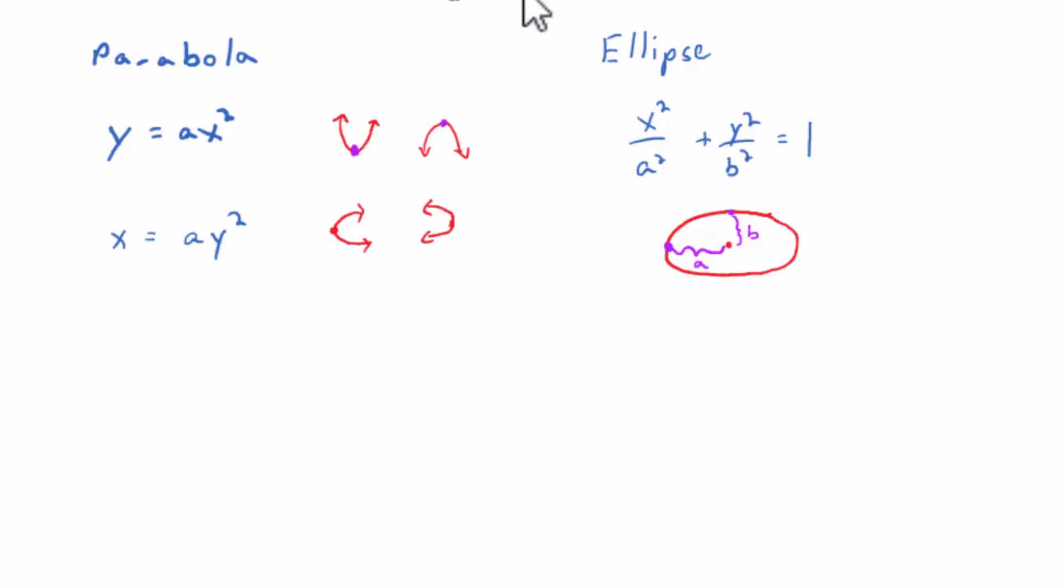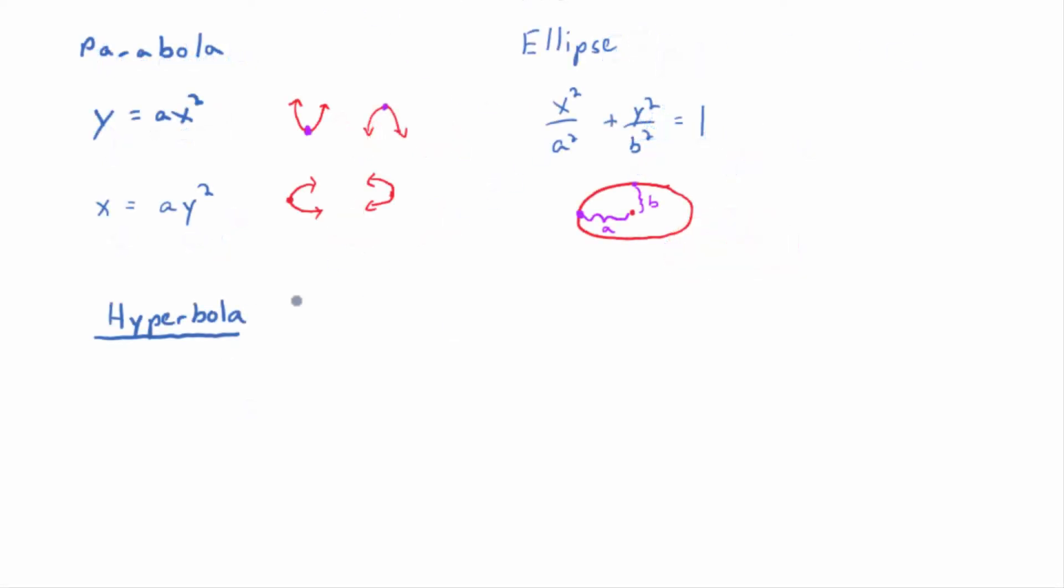And then, of course, there's the hyperbola. The equation looks, well, I do have to show you both equations here. They look a lot like the equation of an ellipse. So you could have this version: x squared divided by a squared minus y squared divided by b squared equals 1. And remember, that's if it opens horizontally. So you've got one branch opening to the left, one branch opening to the right. Again, I'm making the center 0, 0 here.